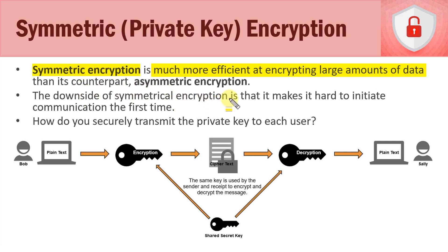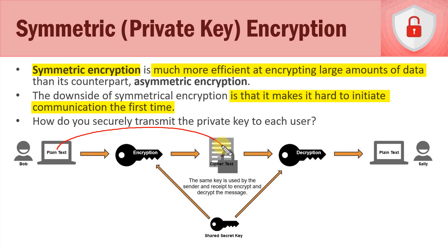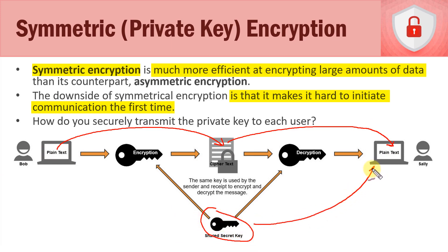The downside of symmetric encryption is that it makes it hard to initiate communication the first time. If Bob wants to convert plaintext into ciphertext and send it to Sally, how does he securely get that key to her? Within a small company it's fine, but once you're in different physical locations it becomes an issue — and that's where asymmetric encryption with private and public keys comes in.